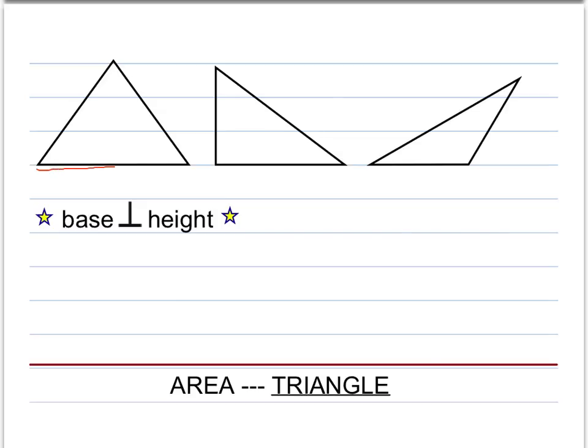So for example, if this were the base, let's call that B, the height is always perpendicular to the base. So here would be, for example, the height of the triangle. The height is sometimes also called the altitude.